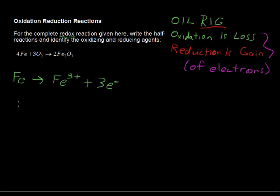And then the reduction half-reaction will be the gaining of electrons. So this oxygen molecule is gaining 4 electrons, and that will yield 2 oxygen ions, 2O2-.